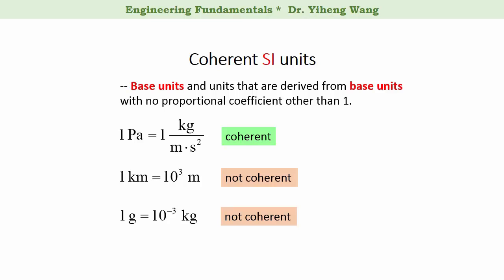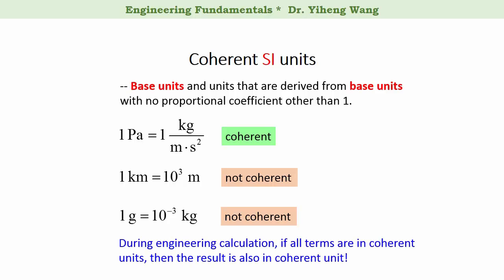So why do we want to know this? This is because in engineering calculation, if we can set up the equation in a way that all terms are given in coherent units, then the result is automatically in coherent unit. And it can be very convenient, especially when we are trying to solve complicated problems.